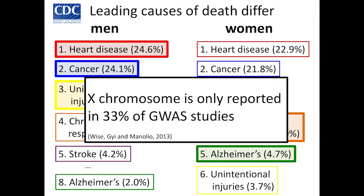There may be societal, gender, or socioeconomic factors interacting with genetics. But there's a glaring elephant in the room: we have XX and XY, yet the X chromosome is only reported in about 33% of genome-wide association studies. This doesn't even mean they analyzed it — just that they mentioned aligning to it. And the Y chromosome is even more ignored.